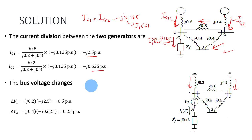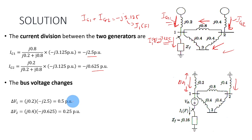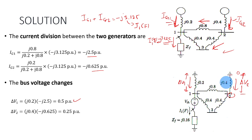We want to calculate the change of bus voltage. For bus number 1, delta V1 between those two points equals IG1 multiplied by the impedance at this branch: minus J0.2 multiplied by minus J2.5. The change of voltage at bus 2 is at this location — from the ground to bus number 2. The change of voltage between those two points is the current flowing in this branch multiplied by the impedance in this branch. The impedance is J0.4 and the current here is IG2 — IG2 is the same current flowing through this branch.